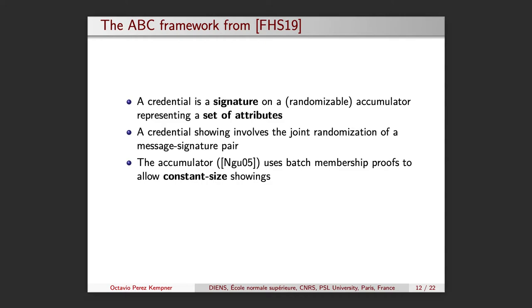The accumulator uses batch membership proofs to allow constant size showings. Observe that by randomizing the accumulator and the corresponding membership witness, no information from the user is leaked, but the verification still succeeds. The same applies for the updated signature.